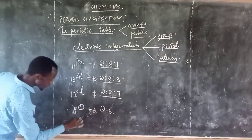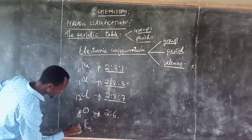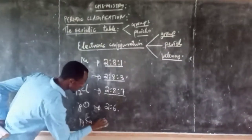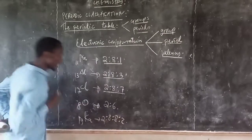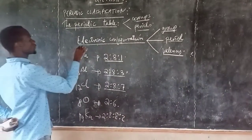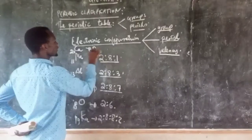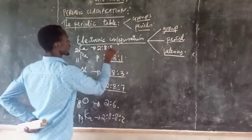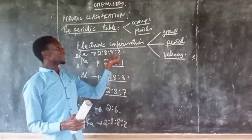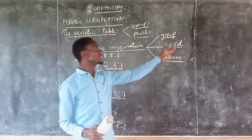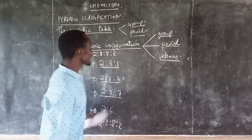What about potassium? We are having 19, that is 2, 8, 8, 1. What about calcium? That is 20, we are having 2, 8, 8, 2. From here, we may determine what is called group, period, and valence.